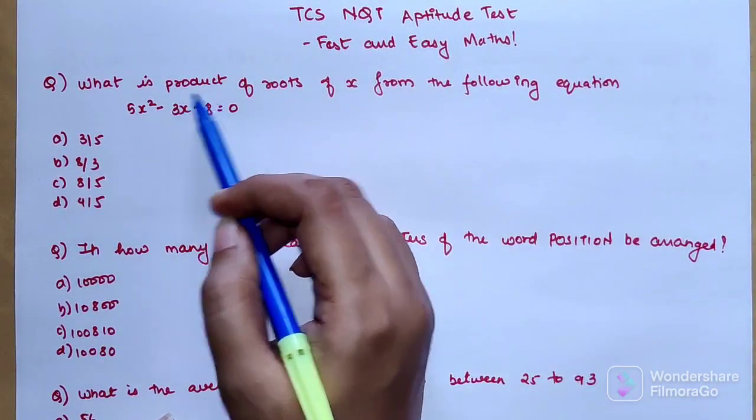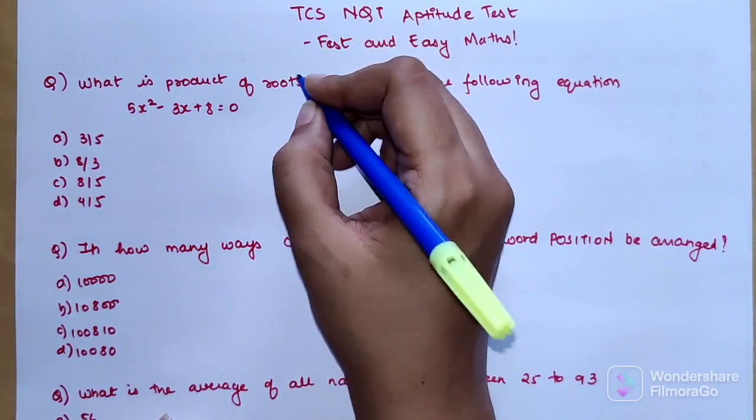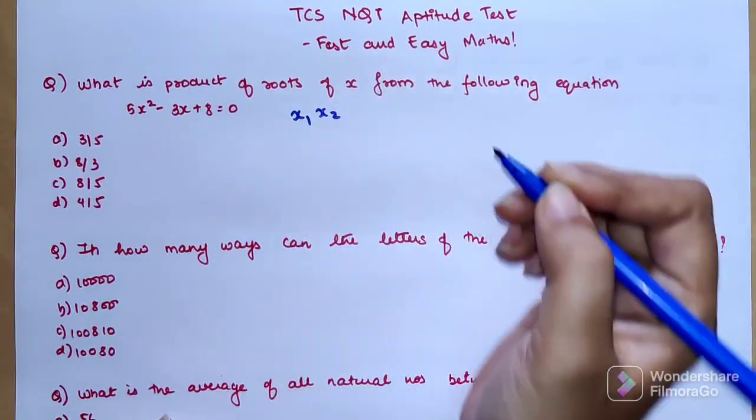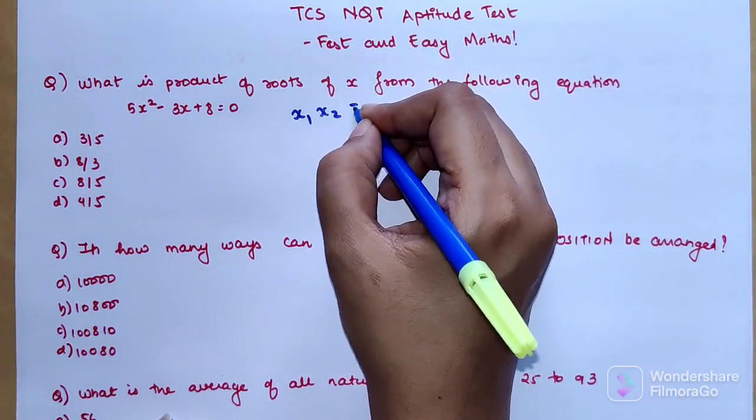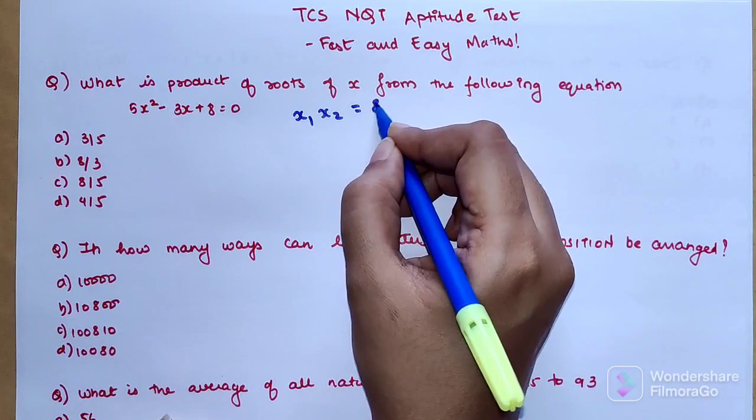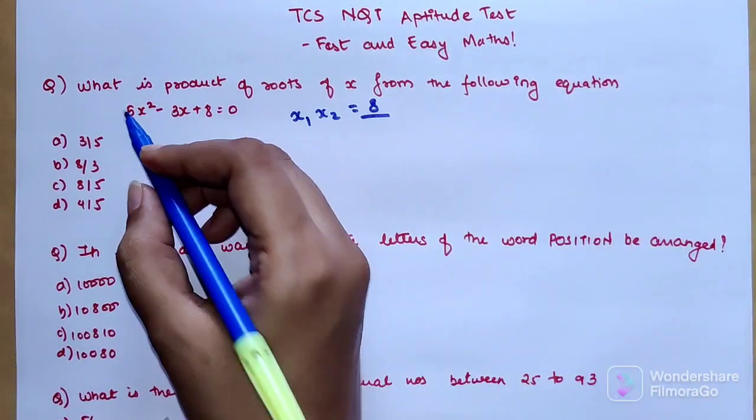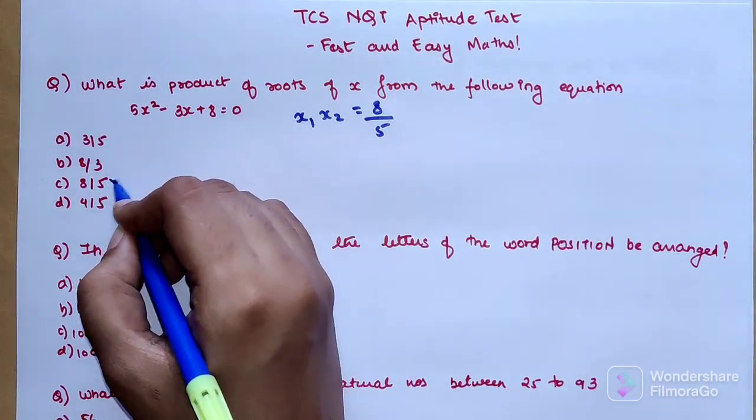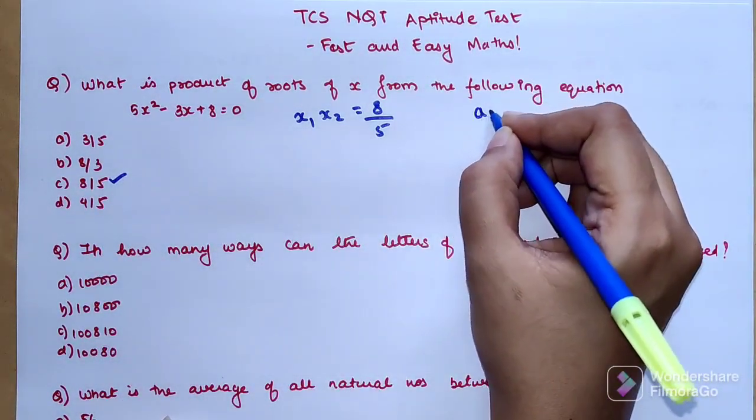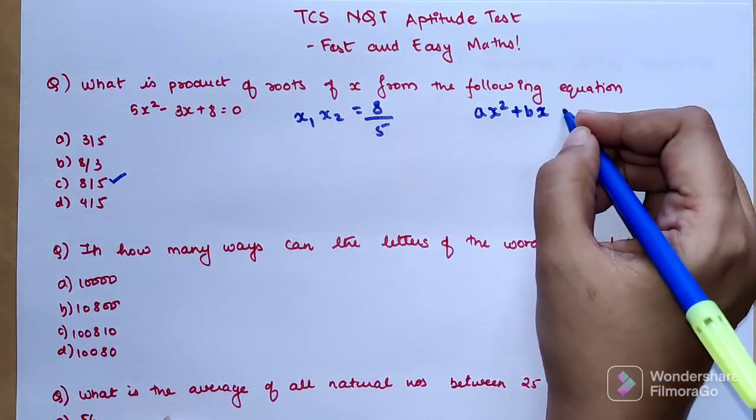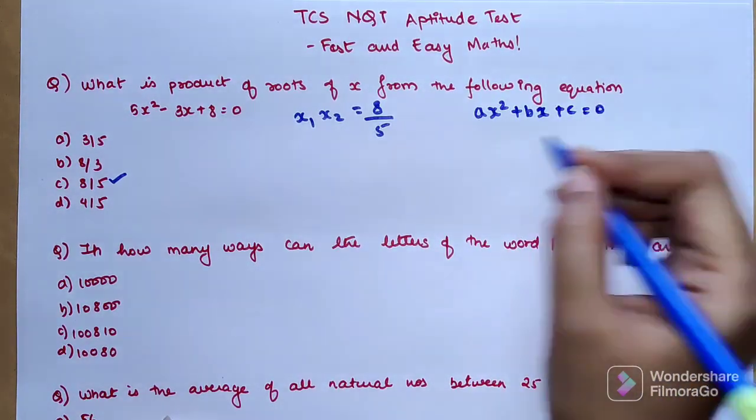They are asking you to find the product of roots. If the roots are x₁ and x₂, the product of roots is the constant, which is 8, divided by the coefficient of x², which is 5. So the answer is 8/5.